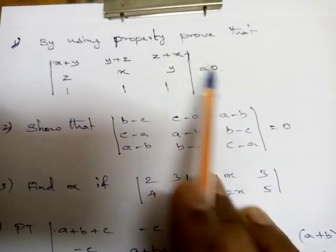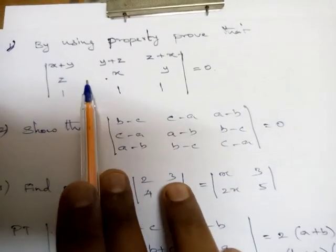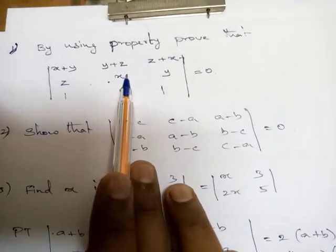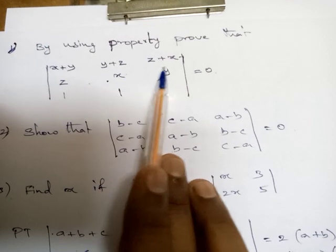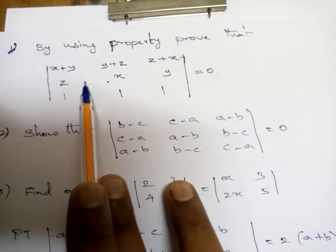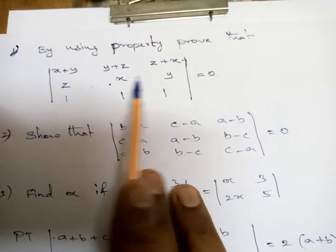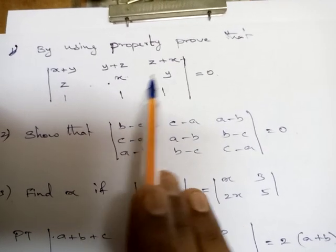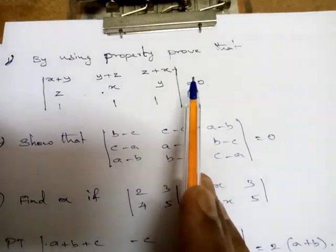By using the property, we have to prove that the determinant with rows (x+y, y+z, z+x), (z, x, y), (1, 1, 1) is equal to 0.